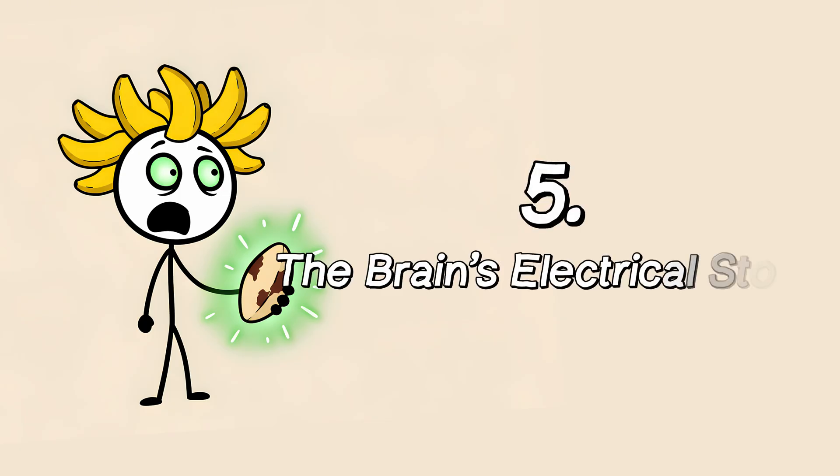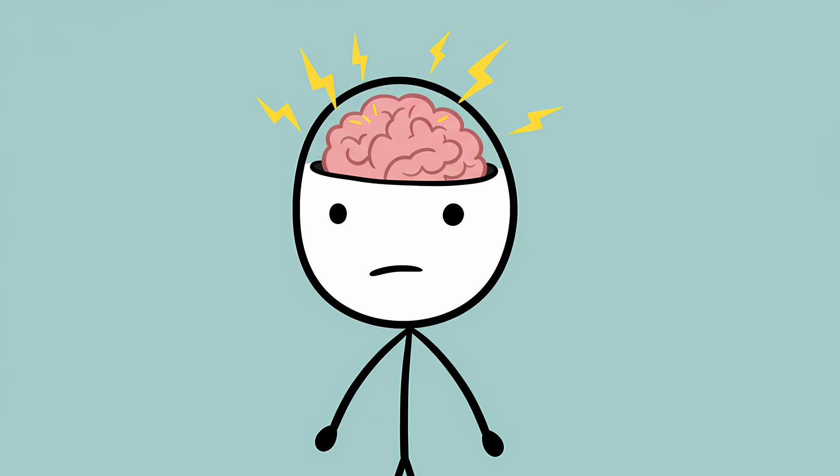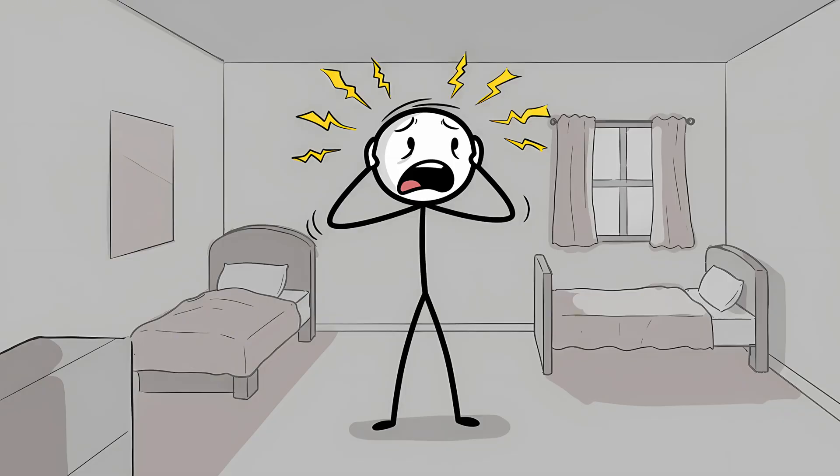Number five, the brain's electrical storm. For a long time, the best clues about Déjà vu came from a slightly terrifying source. Epilepsy. Specifically, temporal lobe epilepsy. Patients who experience seizures in this region of the brain often report experiencing intense, prolonged, and often distressing Déjà vu right before a seizure begins. This is known as an aura, a sort of neurological warning shot.